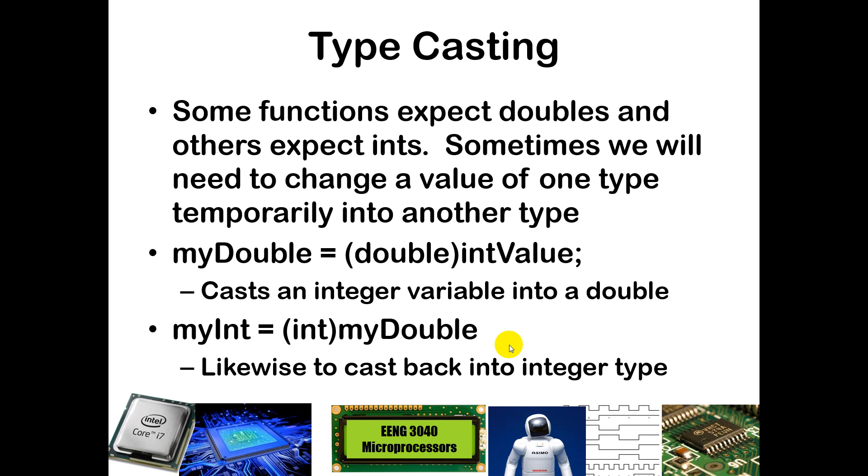It will sometimes truncate and sometimes automatically do some casting when you call a function with a different type than what it is expecting.